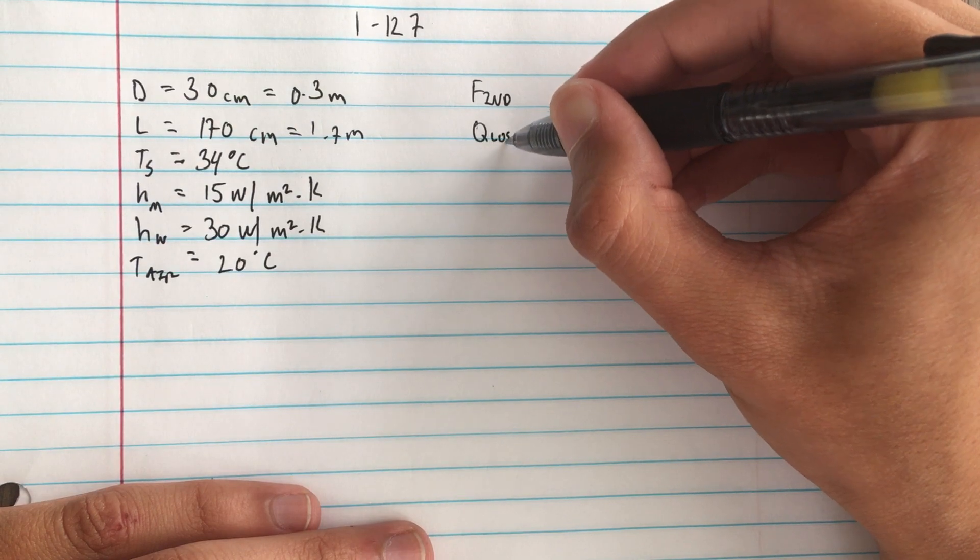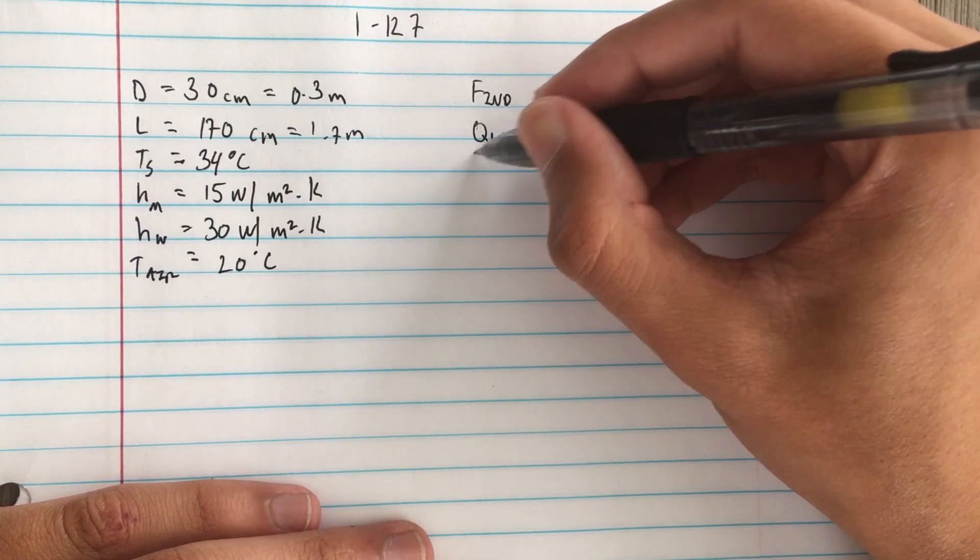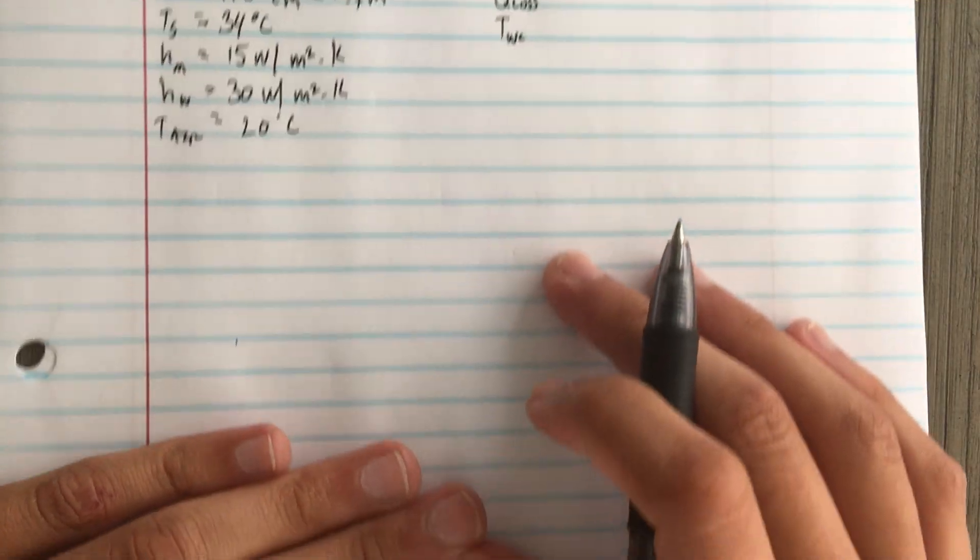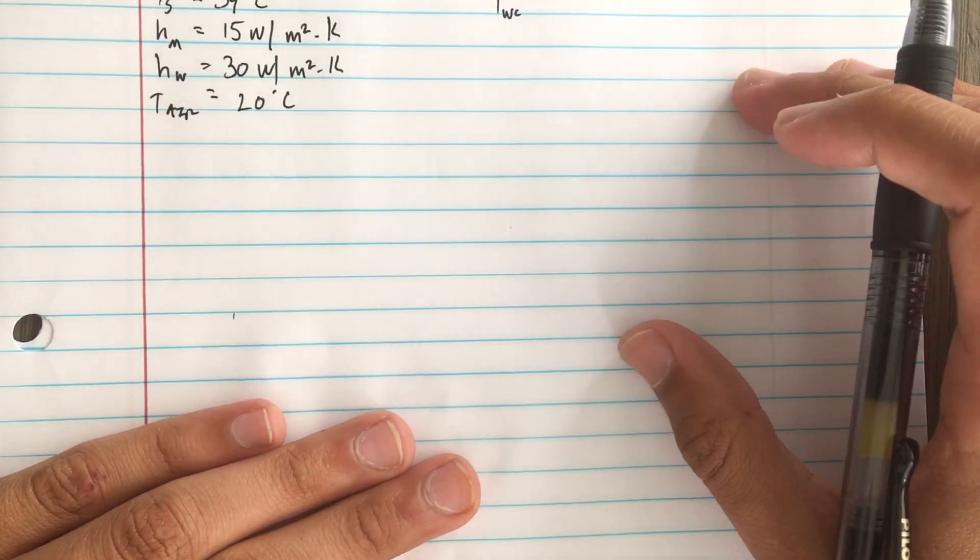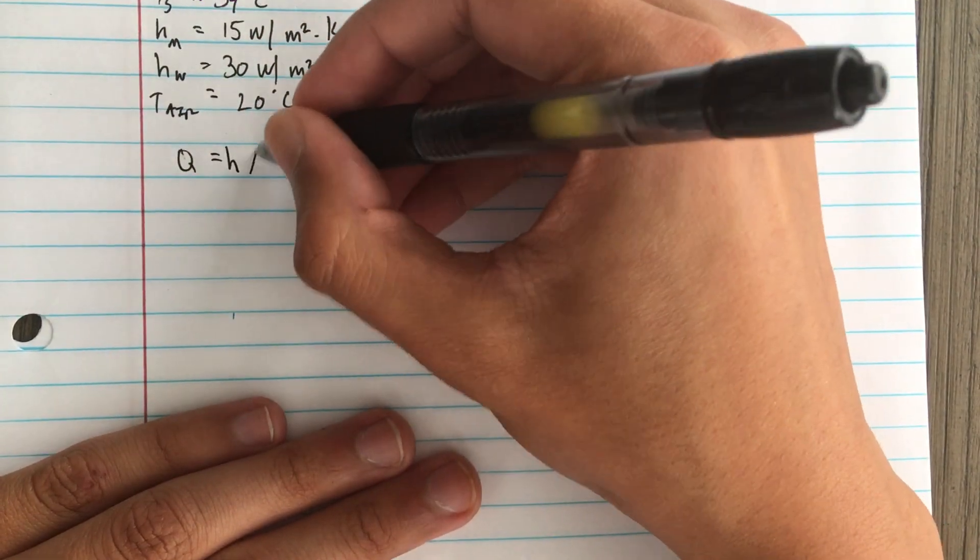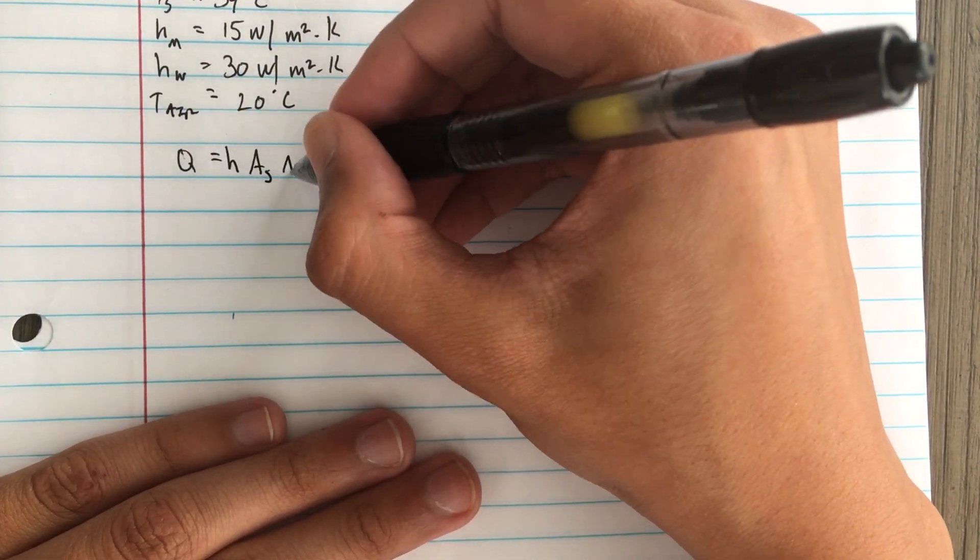What we're trying to find is the heat loss by the man and the wind chill temperature. So the first thing we do is use this formula: Q equals h times As times delta T.